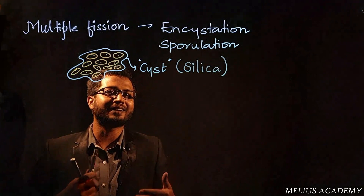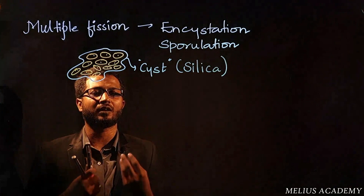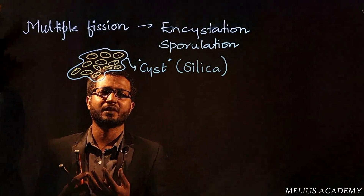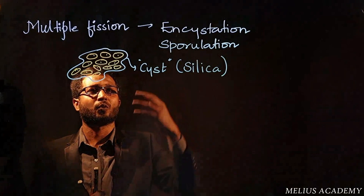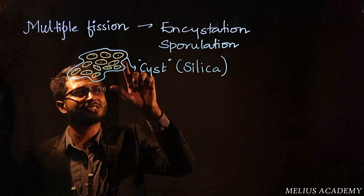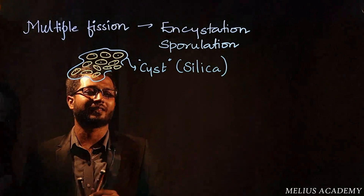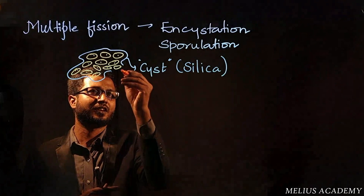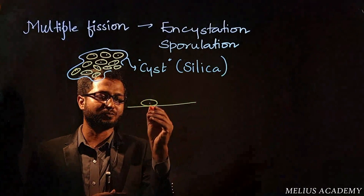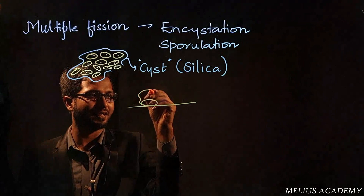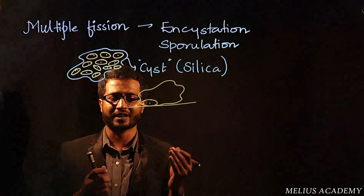Once favorable conditions start appearing — preferable temperature, water conditions, humidity, or rainfall — the cyst is going to tear up. The cells or structures are released from the body, and whenever they fall onto a suitable substratum, each cell forms a new amoeba organism. This is how the organism multiplies.